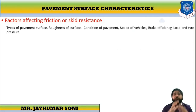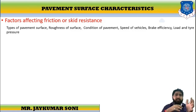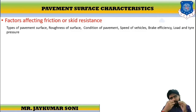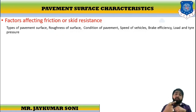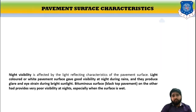The factors which affect friction or skid resistance: skidding and slipping majorly depend on the type of pavement surface — whether it is wet or dry, whether it is bituminous or concrete, what kind of roughness is there, the condition of the pavement, whether it requires maintenance, the speed of the vehicles, the efficiency of the brakes, the load of the vehicle, and the tire pressure.